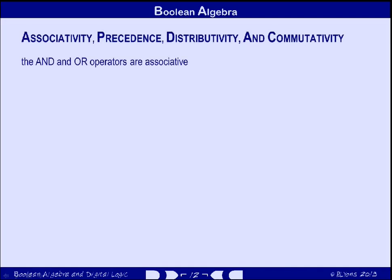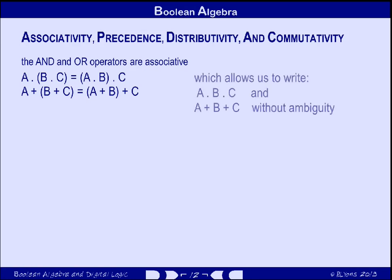There are some other properties of Boolean operators that we can take advantage of when manipulating Boolean expressions. First, the AND and OR operators are associative — that means that if we apply the AND operator to A and the result of ANDing B and C together, we always get the same result as if we AND A and B together and then AND the result with C. In other words, it doesn't matter which AND operator gets applied first. Similarly, if we have three variables A, B and C, we can apply the OR operator to B and C first and then OR the result with A, or we can apply the OR operator to A and B first and then OR the result with C. This means we can write out AND terms or OR terms involving more than two variables without a whole lot of irritating parentheses.